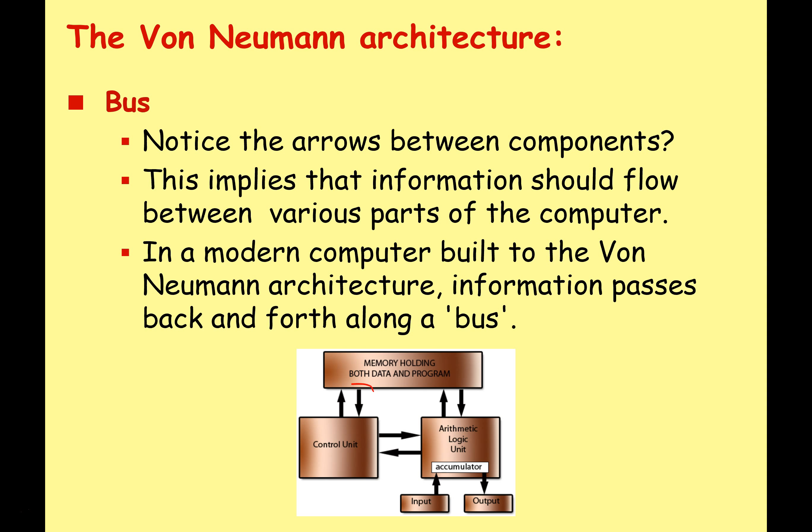We've also got all these arrows on our diagram, which show that there needs to be a way of allowing information to flow between the different parts of the computer. In a modern computer, we call these communication channels a bus — the same way you can take a bus to work or school, a bus transfers information around the computer. The most important type of bus to know about now is the data bus, which is the communication channel between the CPU and the memory.